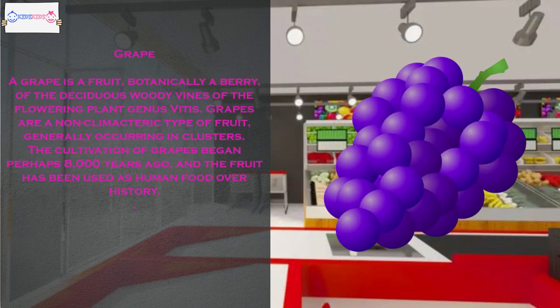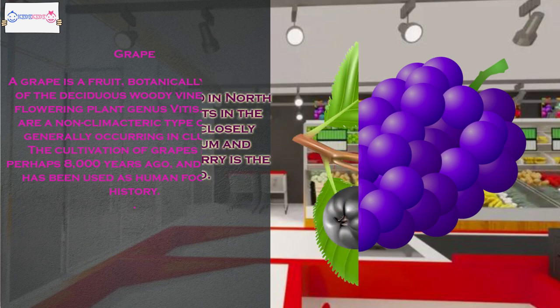A grape is a fruit, botanically a berry, of the deciduous woody vines of the flowering plant genus Vitis. Grapes are a non-climacteric type of fruit, generally occurring in clusters. The cultivation of grapes began perhaps 8,000 years ago, and the fruit has been used as human food over history.